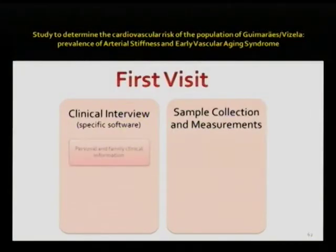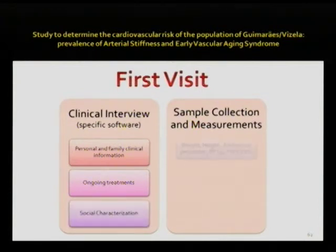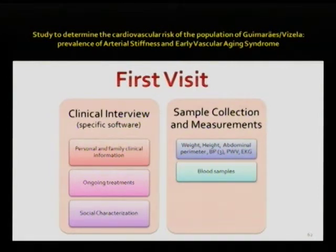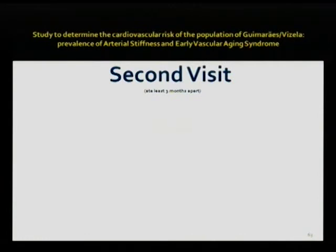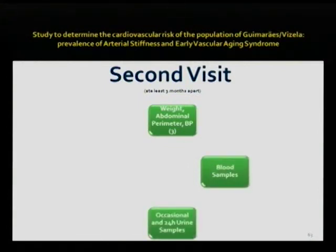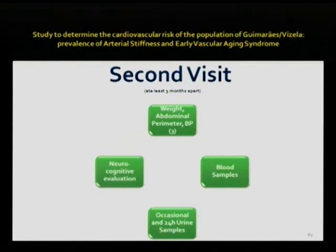In the first visit, all family and personal clinical information was collected, along with blood samples and biological measurements: weight, height, abdominal perimeter, blood pressure, pulse wave velocity, central blood pressure, EKG, and urine samples. The second visit, at least three months apart, repeated these measurements and blood samples, included a 24-hour urine sample collection, and added neurocognitive evaluation — because we are not only interested in vascular aging but in studying the global aging process. We included participants in the Switchbox study, which describes the association of key factors of aging.